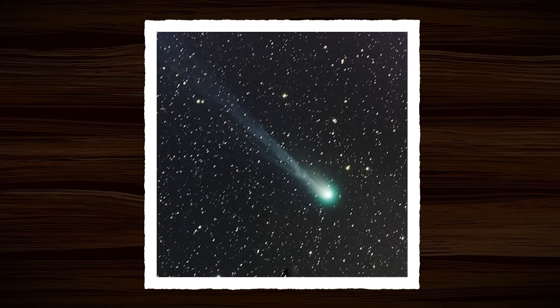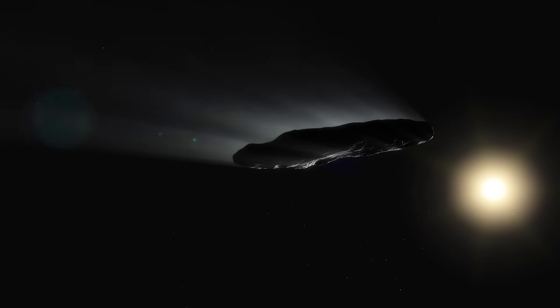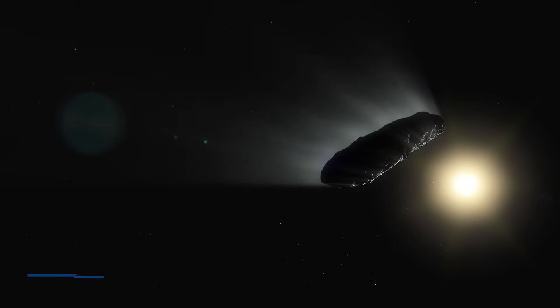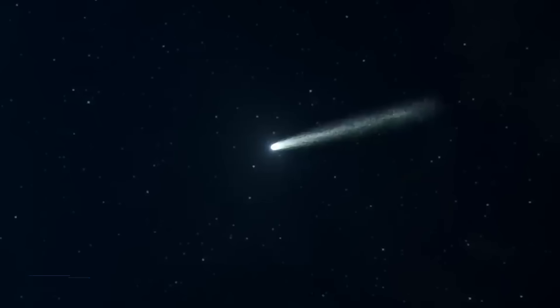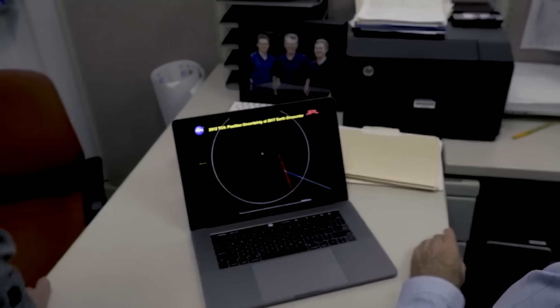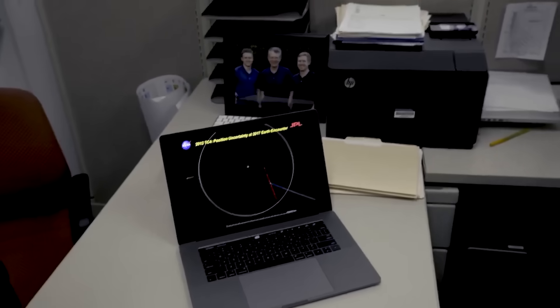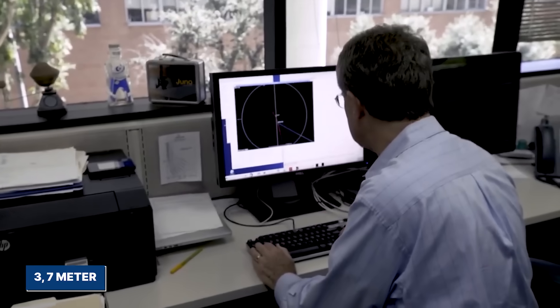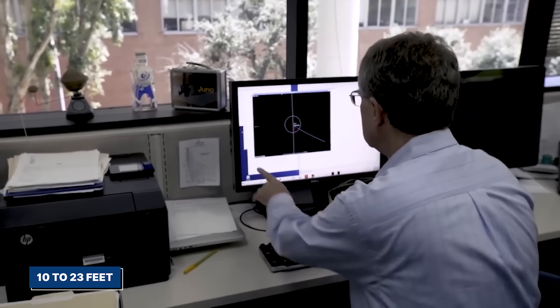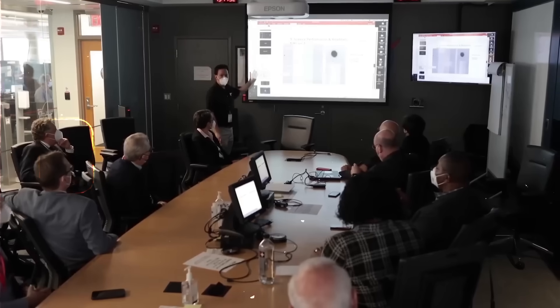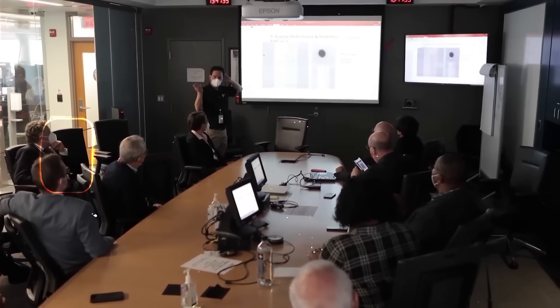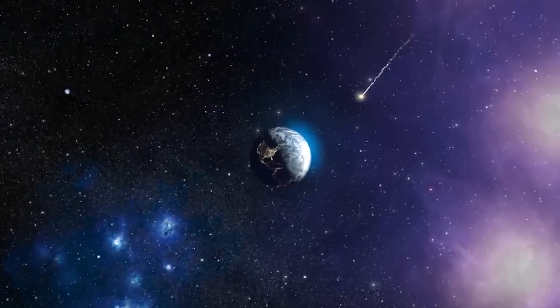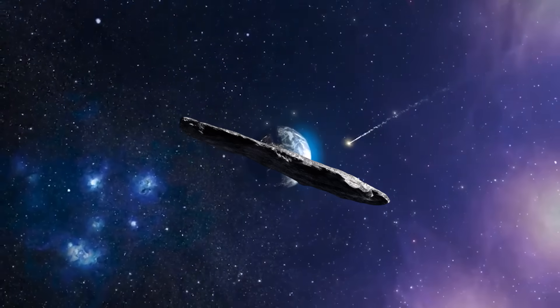Initial estimates of its size were staggering. While its predecessor, the mysterious Oumuamua, was thought to be a few hundred feet long, 3i Atlas was a true giant. Scientists calculated its diameter to be somewhere between 3 and 7 meters, or roughly 10 to 23 feet across. This made it, without a doubt, the largest interstellar object humanity had ever laid eyes on, thousands of times more massive than Oumuamua.